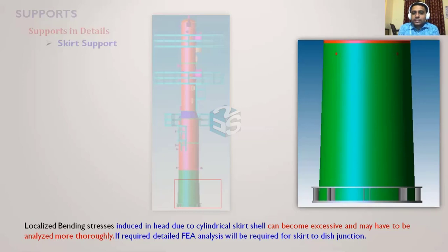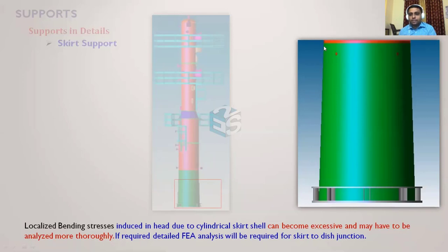Localized bending stresses induced at the head-to-skirt shell junction can become excessively high and may have to be analyzed more thoroughly. If required, a detailed FEA analysis needs to be performed for the local stresses developed in the dished end or shell to which this skirt is welded. When using a flared or conical type of support, spatial analysis may be requested by the customer.